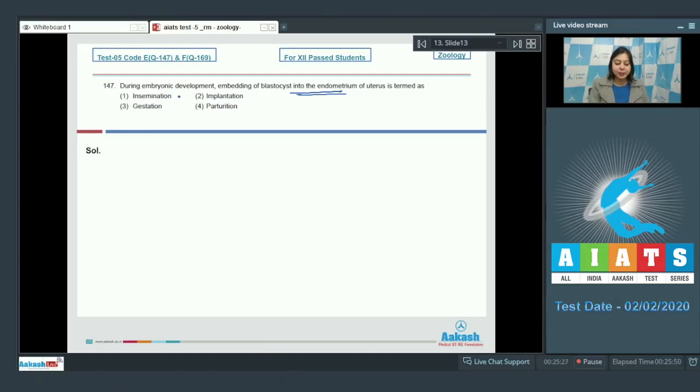Number 1. Insemination is incorrect as insemination is the deposition of semen in the female reproductive tract. Number 2. Implantation is correct as implantation is the embedding of blastocyst in the endometrium.